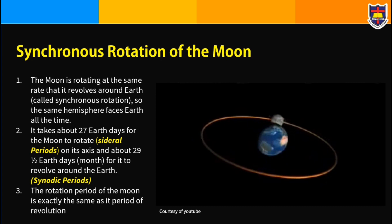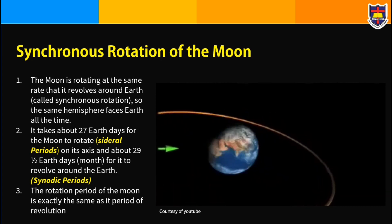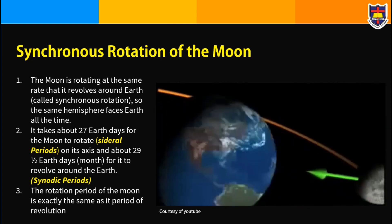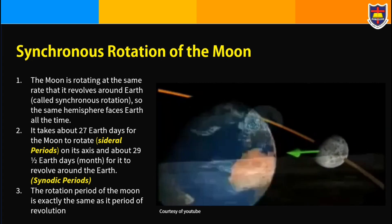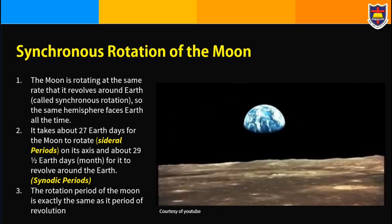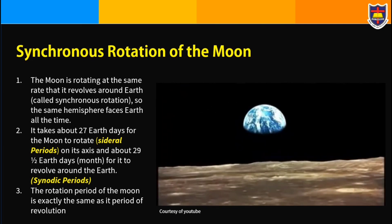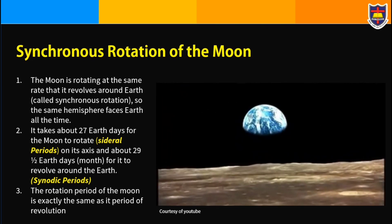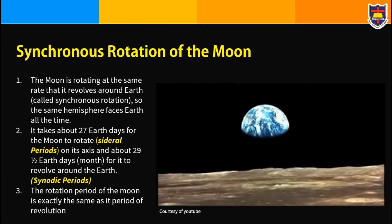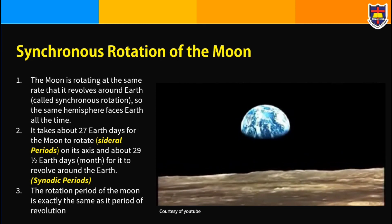Around the Earth once. The moon's rotation and revolution speeds are synchronized, so the moon is in a type of synchronous orbit. The result is that from Earth's point of view, we always see the same side of the moon.